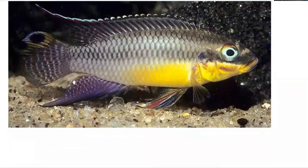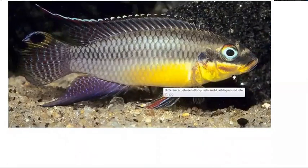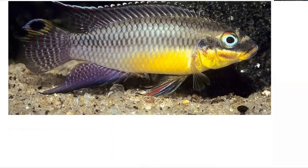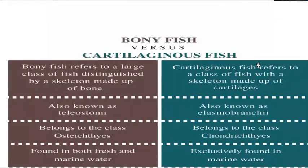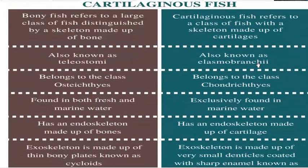In bony fish, the mouth is at the anterior end — the front. The gills are covered by an operculum. Bony fish are often very sensitive. The skeleton is the main distinguishing feature of bony fish, and bony fish form the largest class, including both cartilage fish and bony fish distinctions.